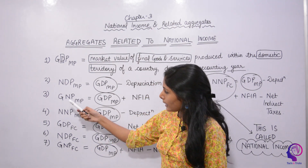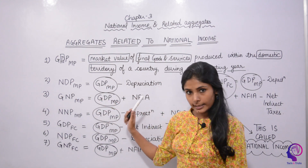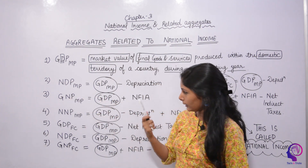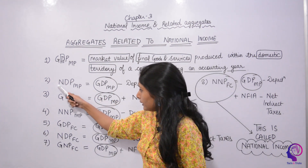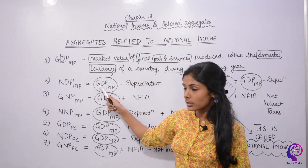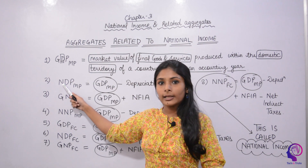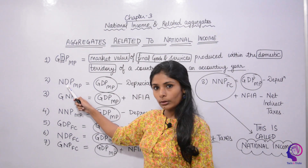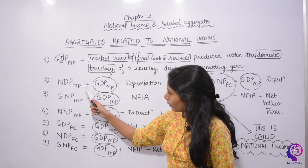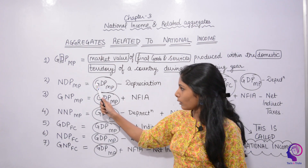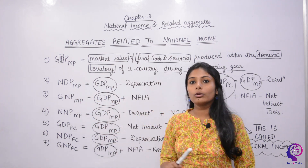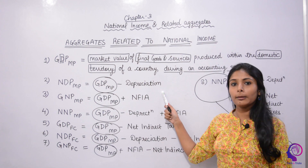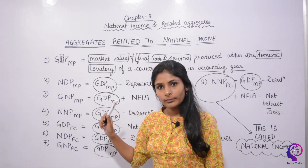Now we will convert GDP MP into different things. First, to go from GDP MP to NDP MP — gross and net are the only difference, and both are domestic and both are at MP. So GDP MP minus Depreciation equals NDP MP.